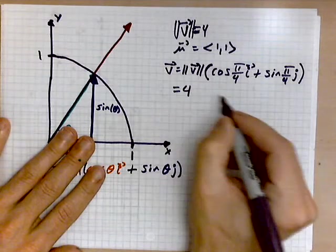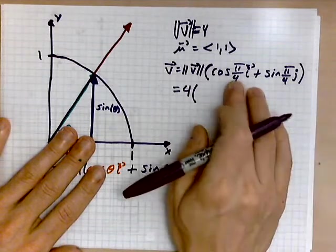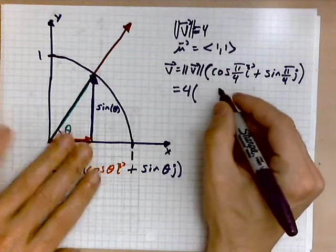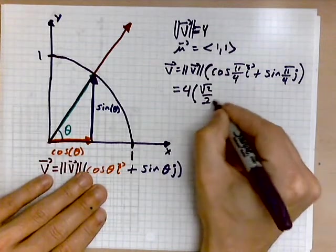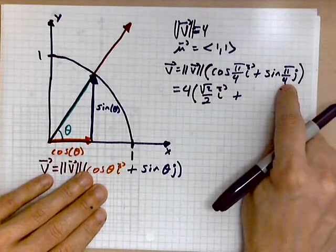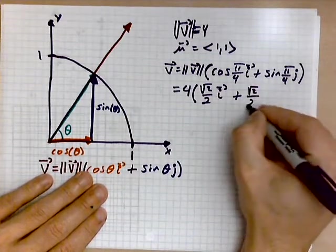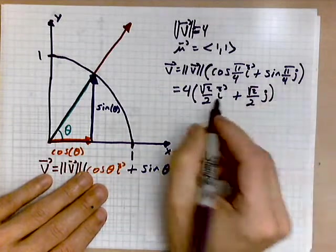So now we have 4. And from our knowledge of the unit circle, cosine of pi over 4 is the root of 2 over 2, i, plus the sine of pi over 4 from the unit circle is the root of 2 over 2, j.